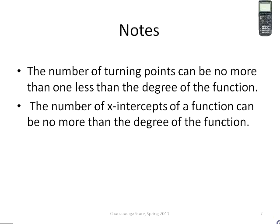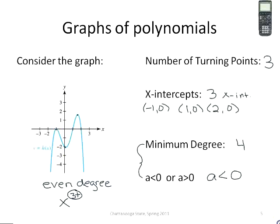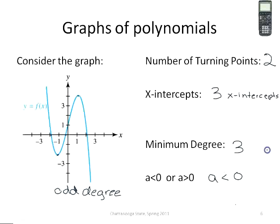Just a general note: the number of turning points can be no more than one less than the degree of the function, and the number of x-intercepts can be no more than the degree. Looking back at the first example, the turning points were 3 and the degree was 4 — one less than the degree. In the second example, the turning points were 2 and the minimum degree was 3 — also one less. The number of x-intercepts satisfied those conditions as well.